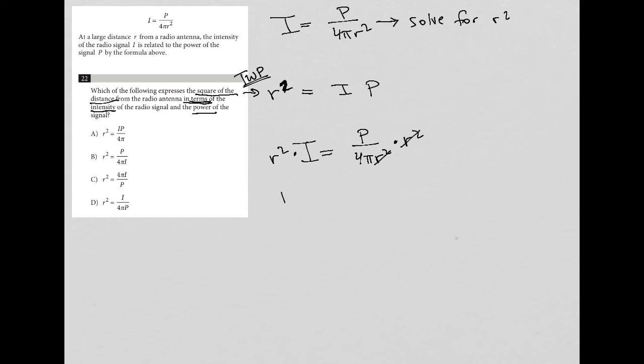Now I have r squared I equals P over 4 pi. And then lastly, because I want r squared isolated, I'm going to divide by I. The same thing I can do here, I'll just say multiply by 1 over I. So dividing by I and multiplying by 1 over I is the same thing. So that gets rid of my I over here, and I'm left with r squared equals P over 4 pi I. Just multiply straight across here, leaving you with that.